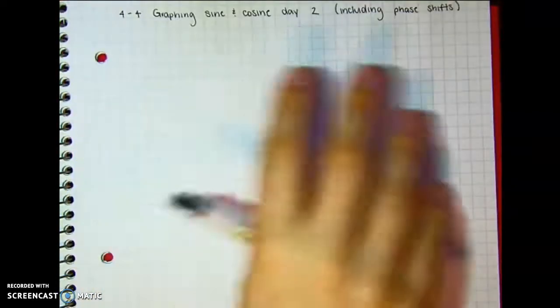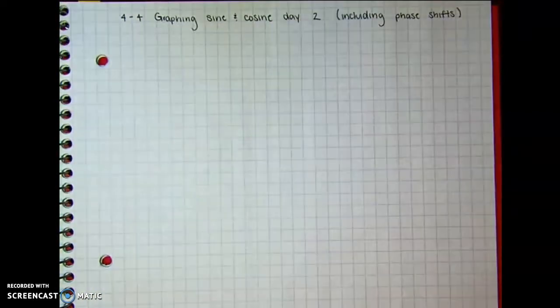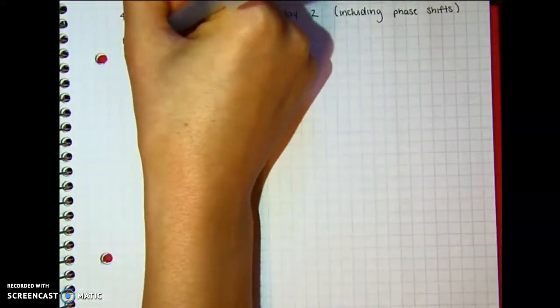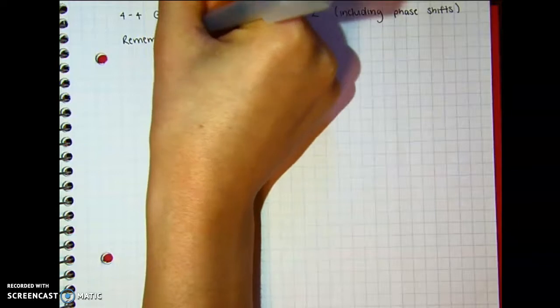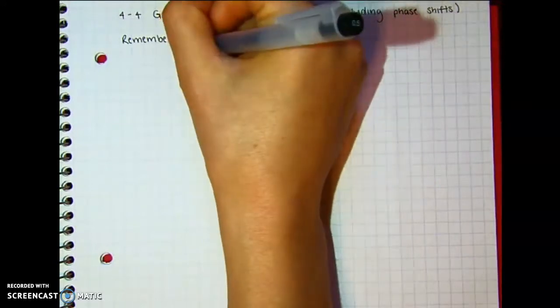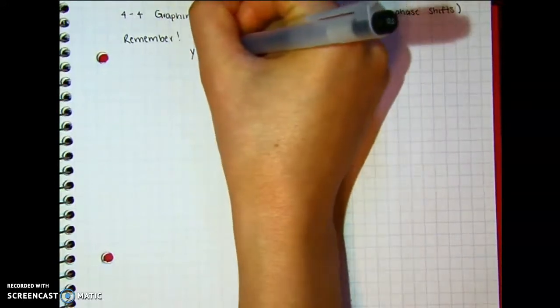So phase shift is moving it to the left and to the right, up and down. But phase shift is typically just moving it left or right, and the vertical shift is the axis. So we need to make sure that we remember the generalized equations and how it affects sine and cosine.